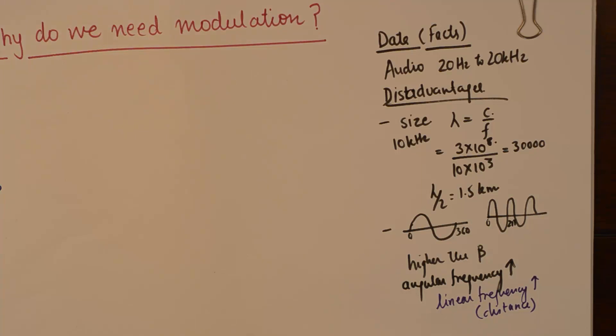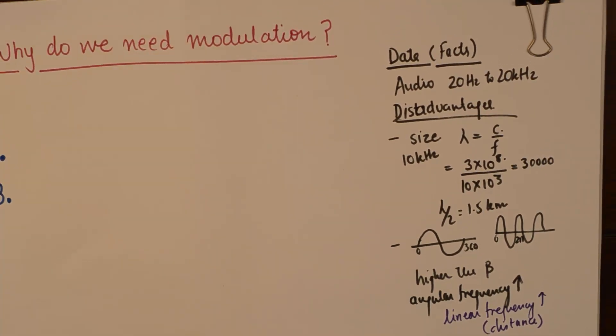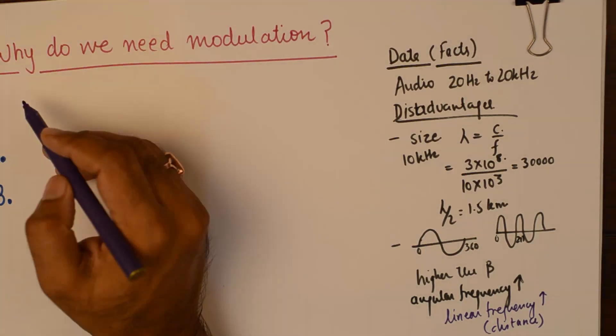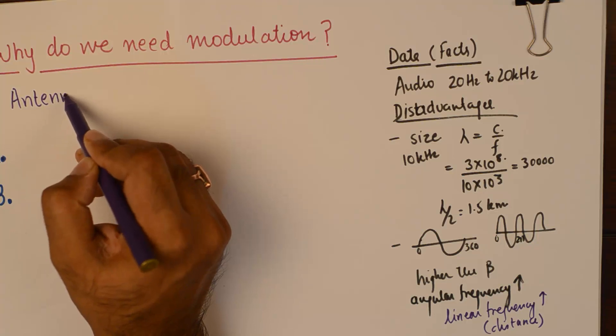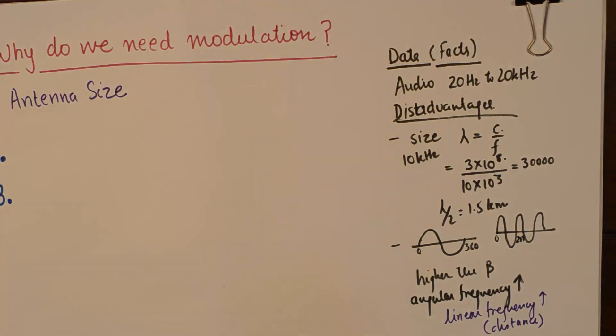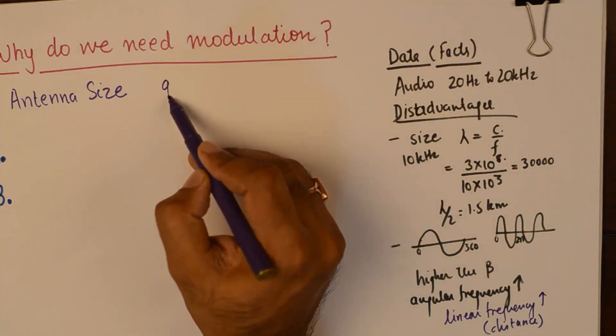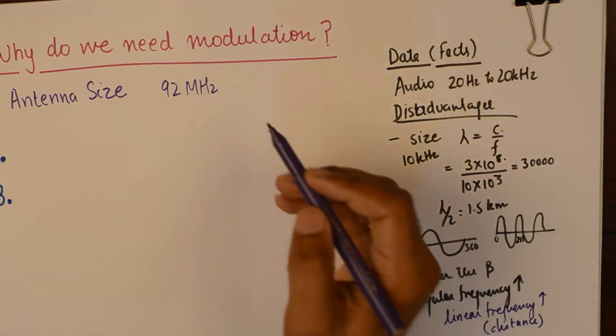These are the two disadvantages of very very low frequency signals that we need to eliminate, and that is why we need modulation. The first point is the antenna size. Now if we take an example of any popular FM radio station's frequency, for example 92 megahertz.